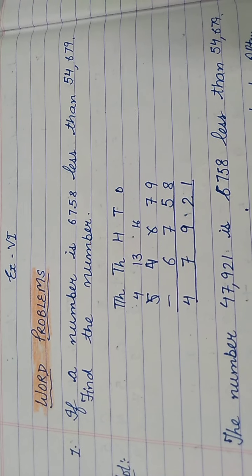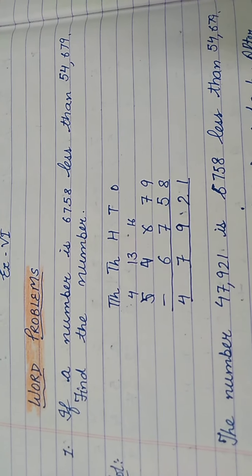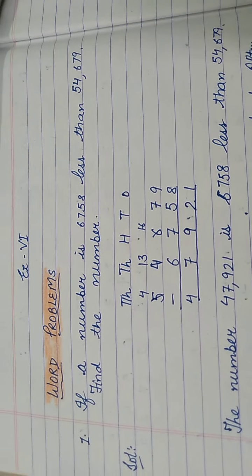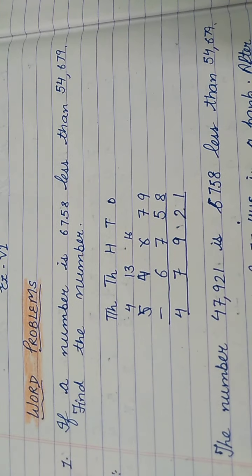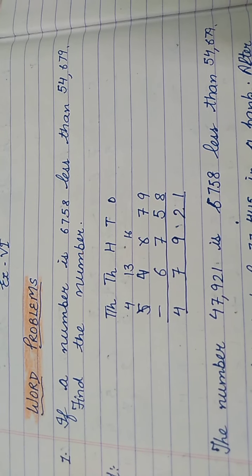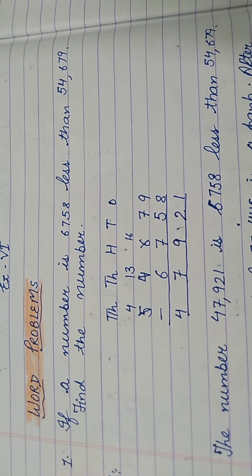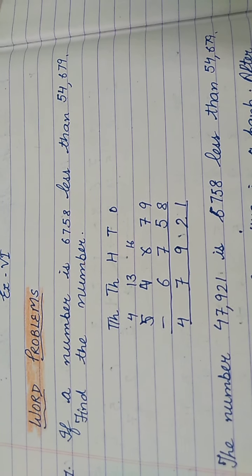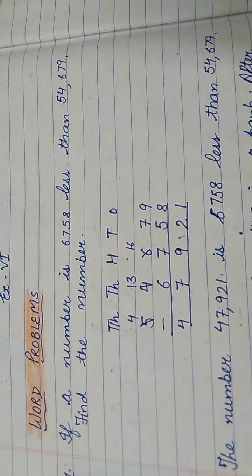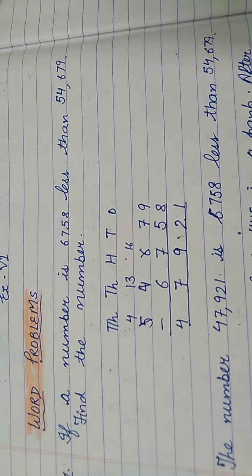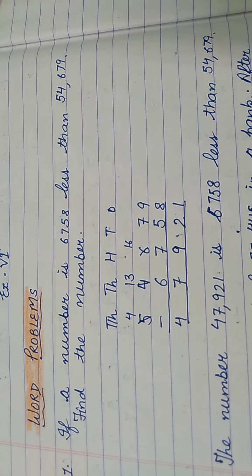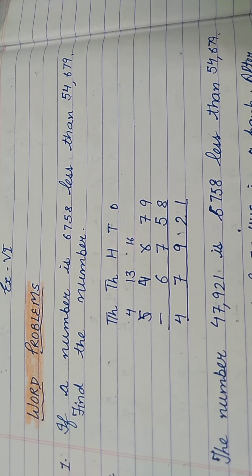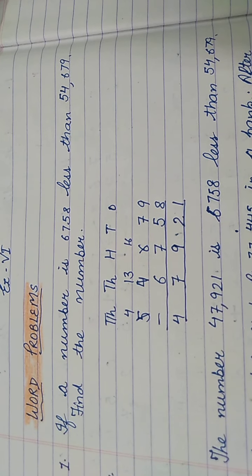There is a number which we do not know yet. It is 6,758 less — meaning how much less? 6,758 less than which number? Less than 54,679. You see, in this also we have to do minus. For minus, first write the larger number minus the smaller number. So subtract these two numbers.